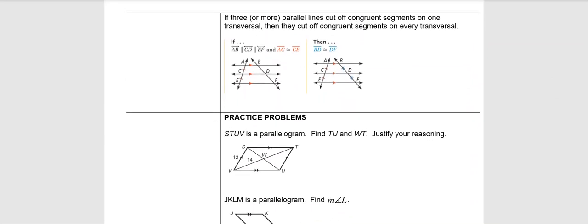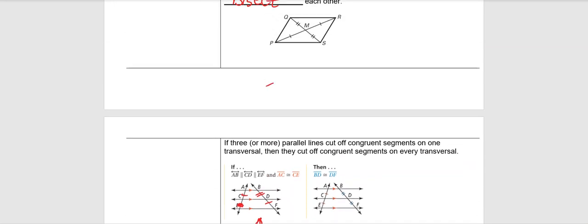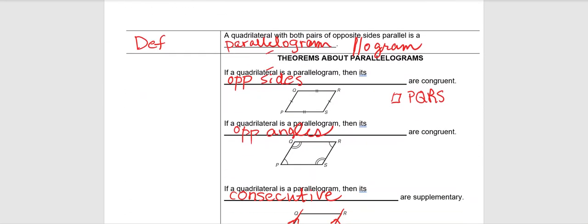The last theorem is not really about parallelograms, but it's included because you have to use this theorem to prove some of the parallelogram theorems. It says if three or more parallel lines cut off congruent segments on one transversal, then they cut off congruent segments on every transversal. So here's the if part: I've got three parallel lines A, B, C, D, and E, F, and they cut off congruent segments AC and CE. Since I know that to be true, then I know on the other transversal these two segments are congruent as well. BD is congruent to DF. We won't be really using that one. We're going to use the theorems related to parallelograms.